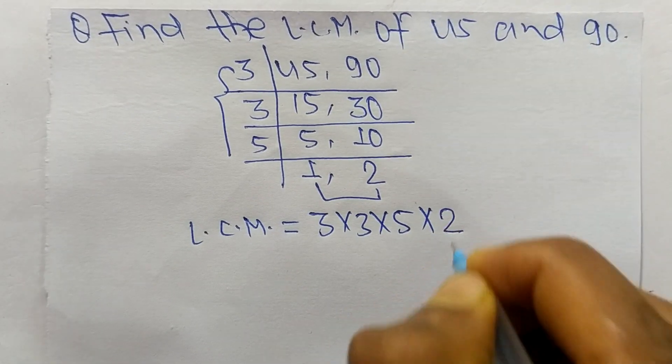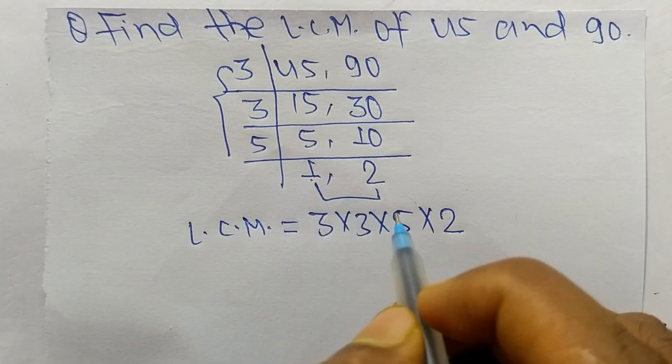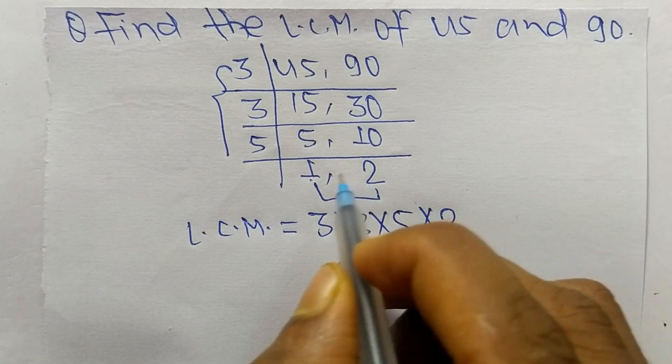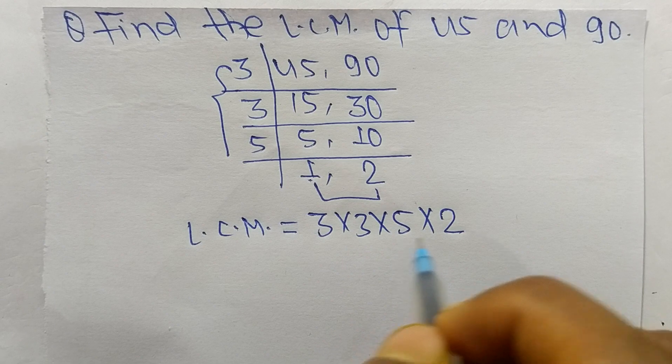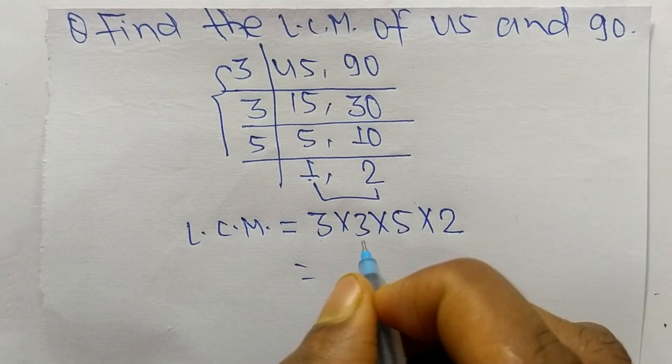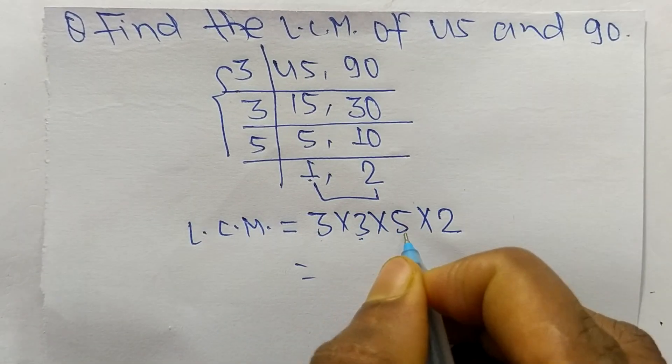We take here only 2 and we neglect 1, because by multiplying any number by 1 we get the same result, so we don't take 1. 3 times 3 equals 9, and 9 times 5 equals 45.